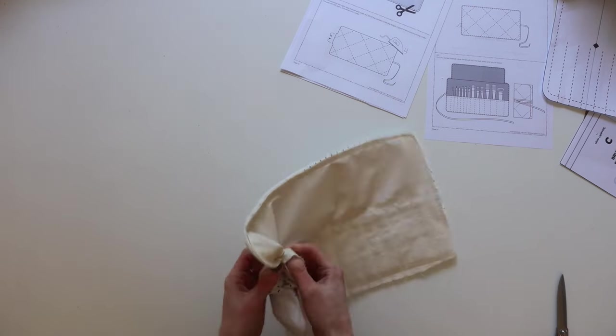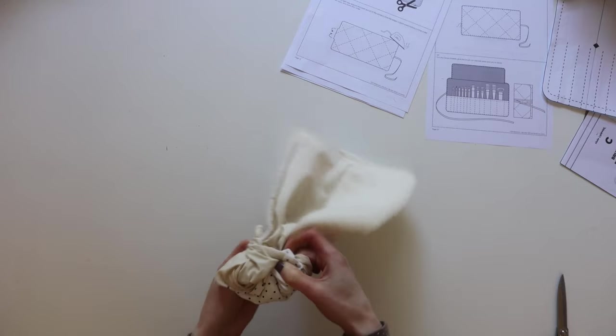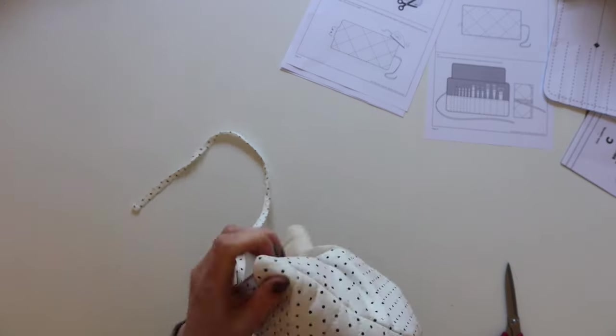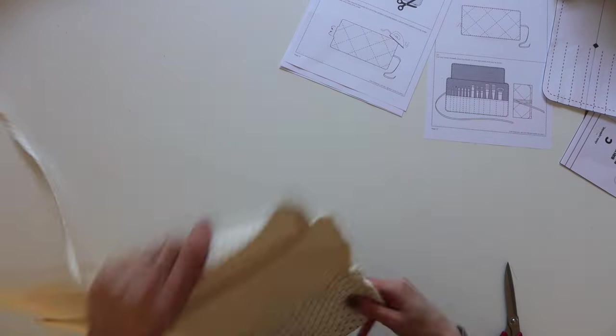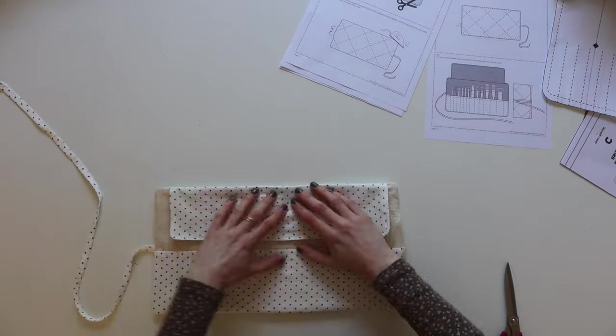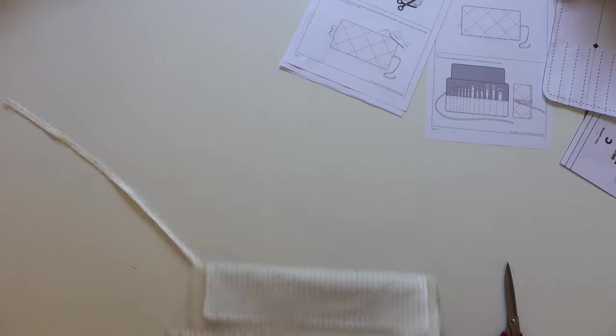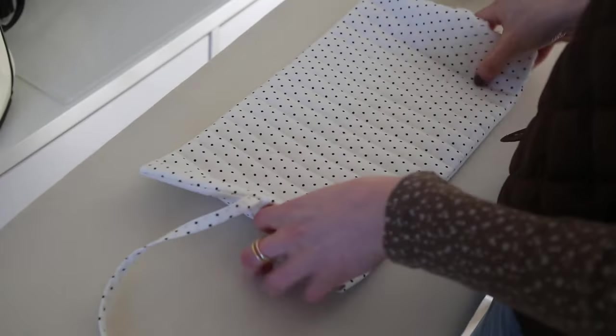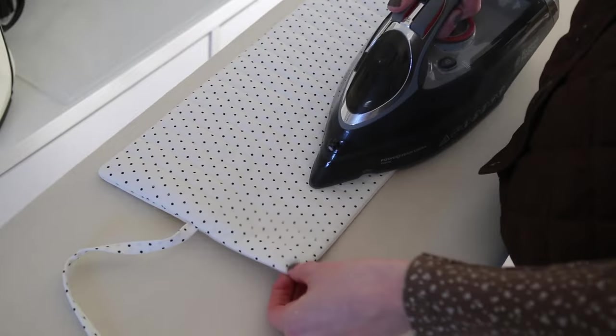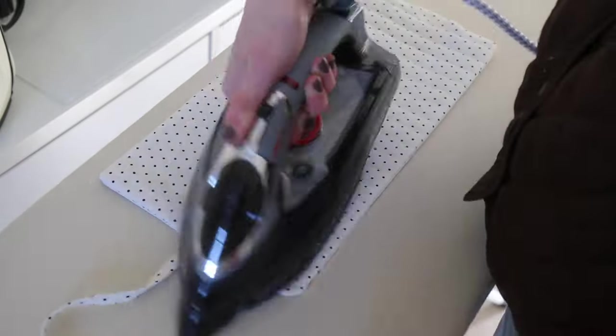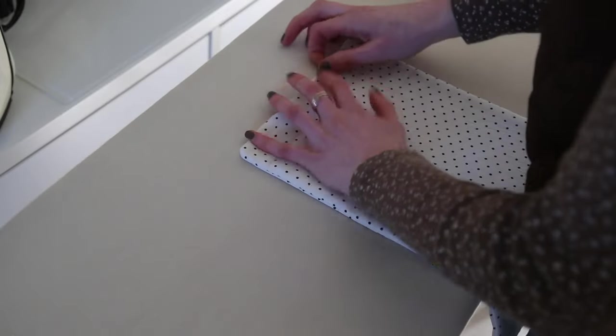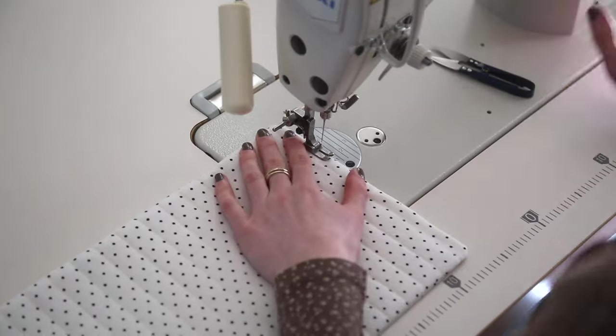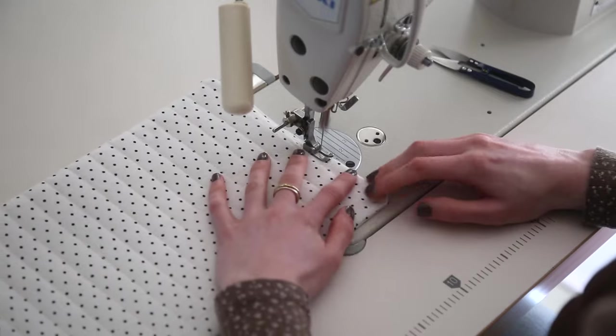Then we can go ahead and turn the brush roll the right way around and spend a good bit of time just opening those edges out. Now we're going to take the whole thing over to the ironing board, press it flat and also press that seam allowance under at the opposite end to the tie. Once that's all pressed and the seam allowance is nicely folded under we're going to go and topstitch all the way around the edge of the brush roll.